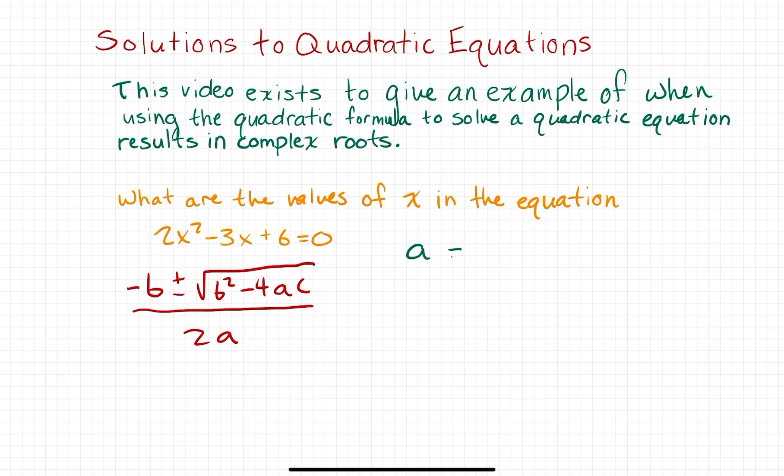a is going to be the coefficient of your leading variable term. So, 2x squared is my leading variable term here, so 2 is going to be a. b is going to be the coefficient of your middle variable term, the variable term that has the power of 1. In this case, it's going to be negative 3. And then c is going to be the constant term that you have left over when you set everything equal to zero. So, in this case, it's going to be 6.